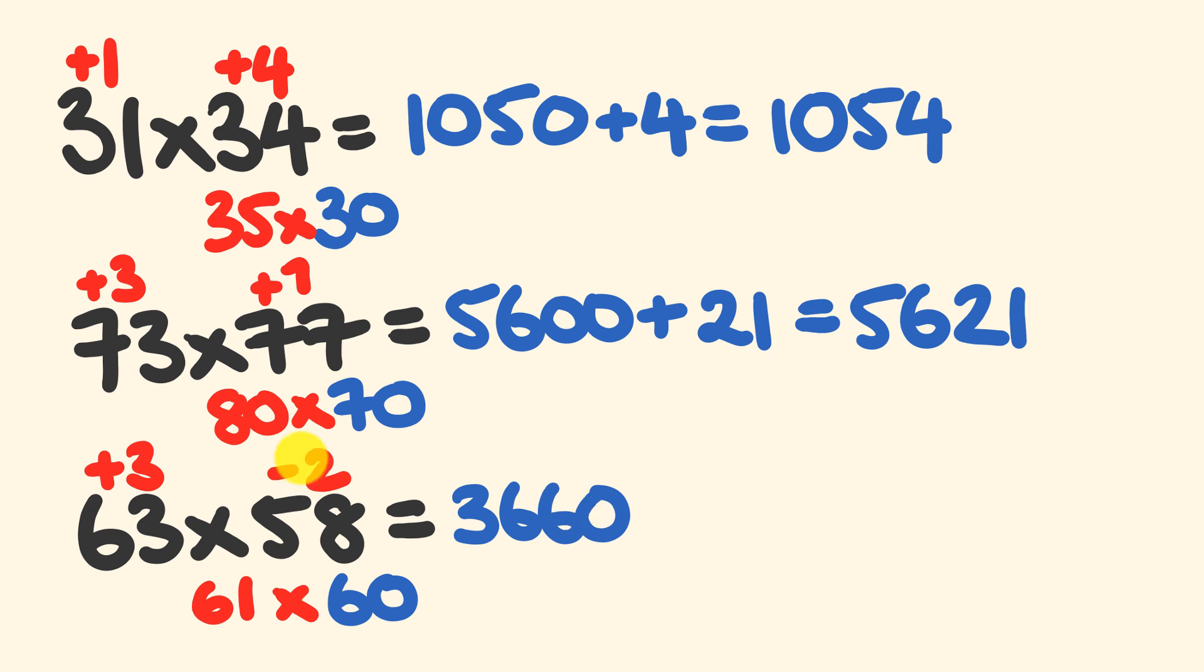Now what we're going to do is we multiply this positive 3 times minus 2. Positive 3 times minus 2. It's the differences that we're multiplying equals minus 6. So we're going to subtract minus 6 from that. 3,660 minus 6 is going to give us the answer of 3,654. Alright, that's not too bad, right? That was pretty easy.